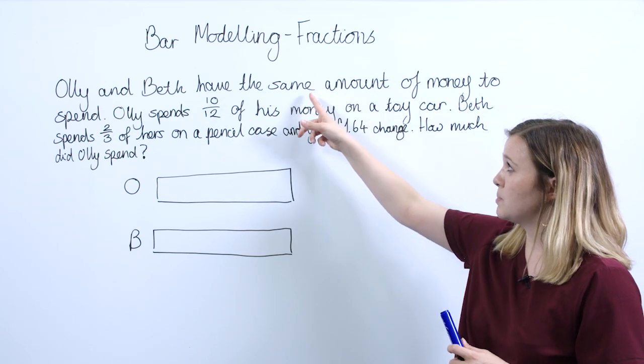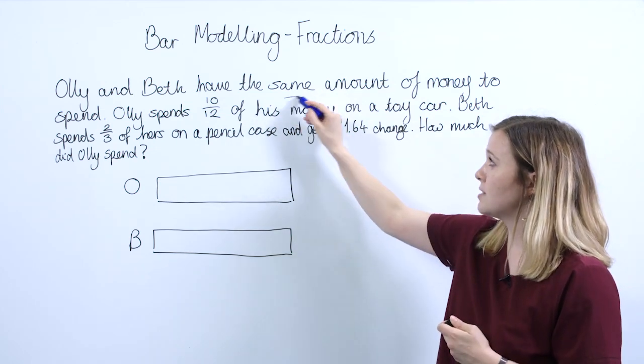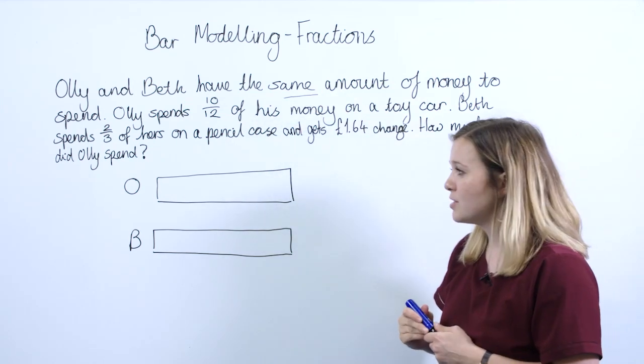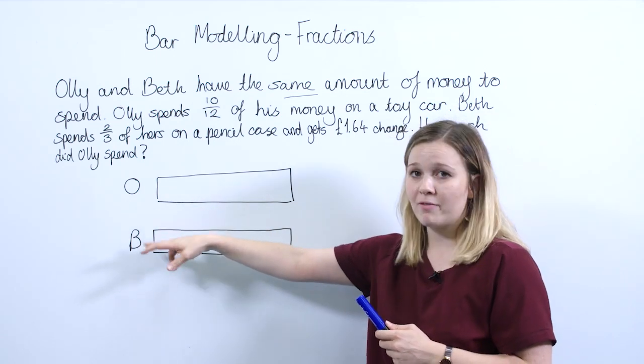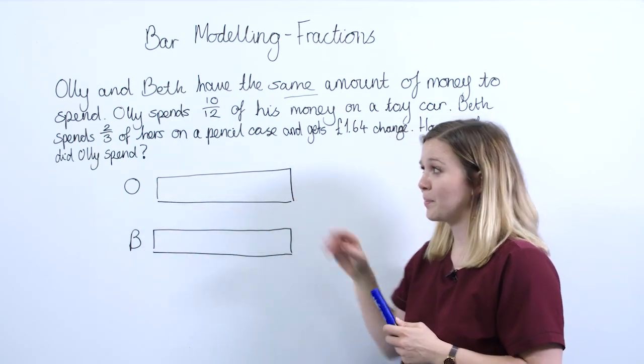Now to solve this question, to begin with we want the pupils to spot that Ollie and Beth have the same amount of money, and that is why I've drawn two bars - one for Ollie, one for Beth - they're exactly the same.